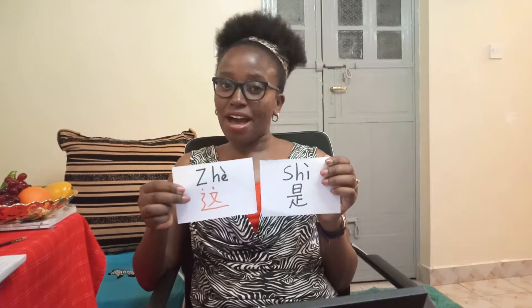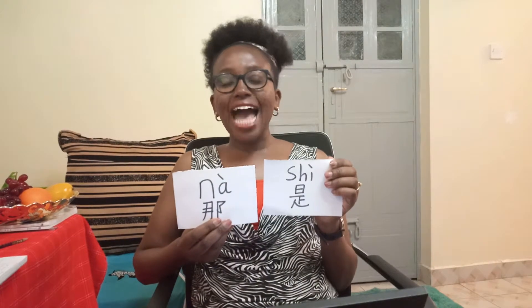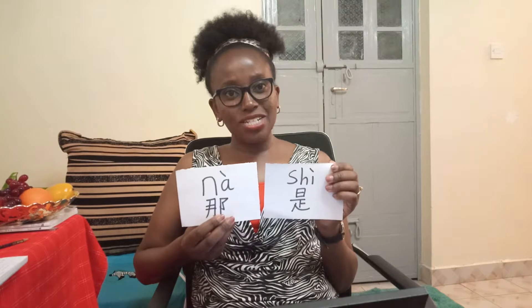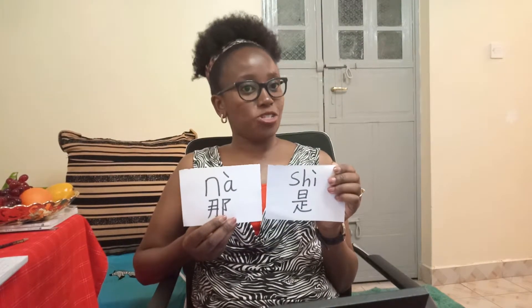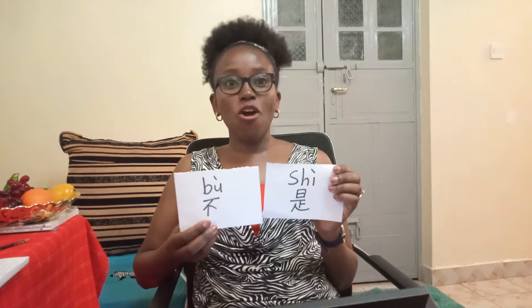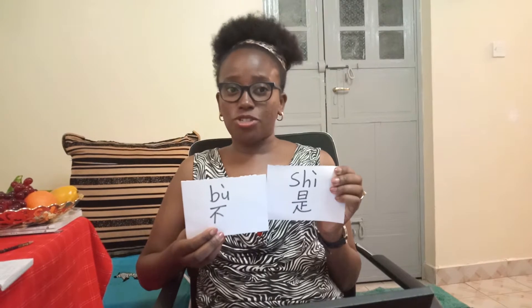'Juh shi baba' — this is a father. 'Na shi' — 'na shi laoshi' — that is a teacher. 'Na shi faih laoshi' — that is a foreign teacher. Now we can negate all these by saying 'bu shi,' meaning 'is not.' 'Juh bu shi faih laoshi' — this is not a foreign teacher. 'Na bu shi faih laoshi' — that is not a foreign teacher.